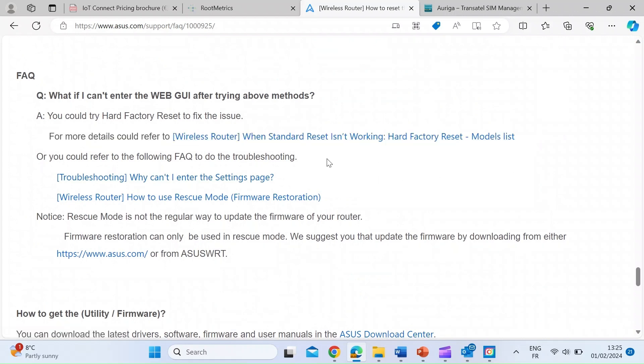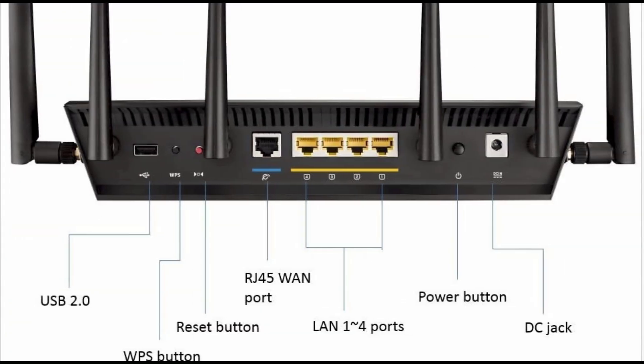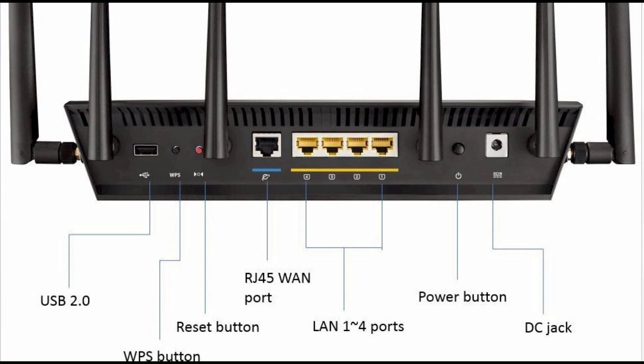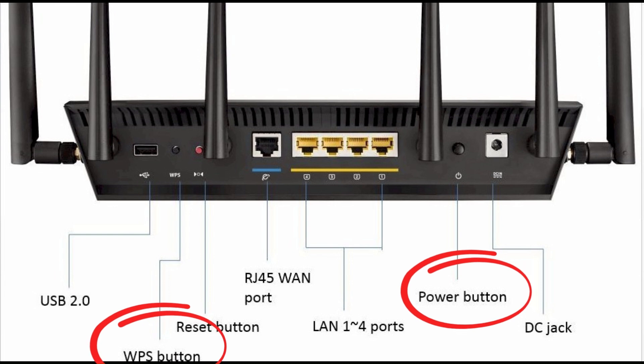As an example, here's how the hard reset method is done for most Asus routers with Wi-Fi 6. First, turn off your Asus Wi-Fi 6 router using the power button on the back. Next, press and hold the WPS button on the back of the router. Turn on the router by pressing the power button while still holding the WPS button. On the front of the router, the power light turns on — keep holding the WPS button while that happens.